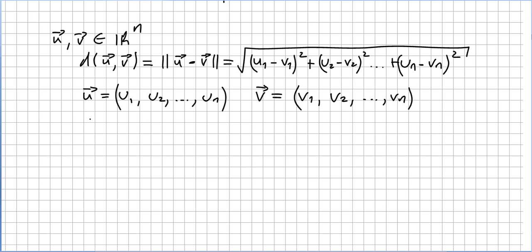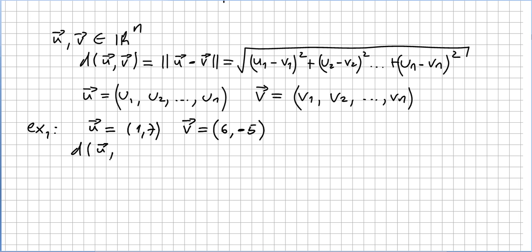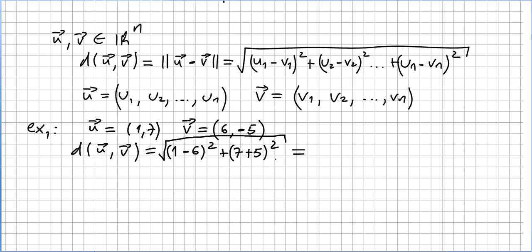In this video we will do some practical examples. Example one: let's say we have vector u = (1, 7) and vector v = (6, -5). What is the distance between u and v? We follow the definition of distance: square root of (1 minus 6) squared plus (7 minus minus 5) squared, which gives us the square root of 169, and that is 13.